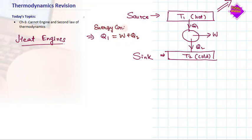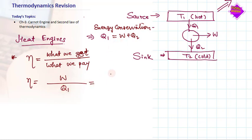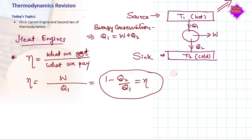Now, defining the parameters of this heat engine: efficiency η is what we get divided by what we paid. What we get is the work done W, and what we paid is Q1 amount of heat. So efficiency η = W/Q1 = (Q1 - Q2)/Q1 = 1 - Q2/Q1. This is the efficiency of the heat engine.